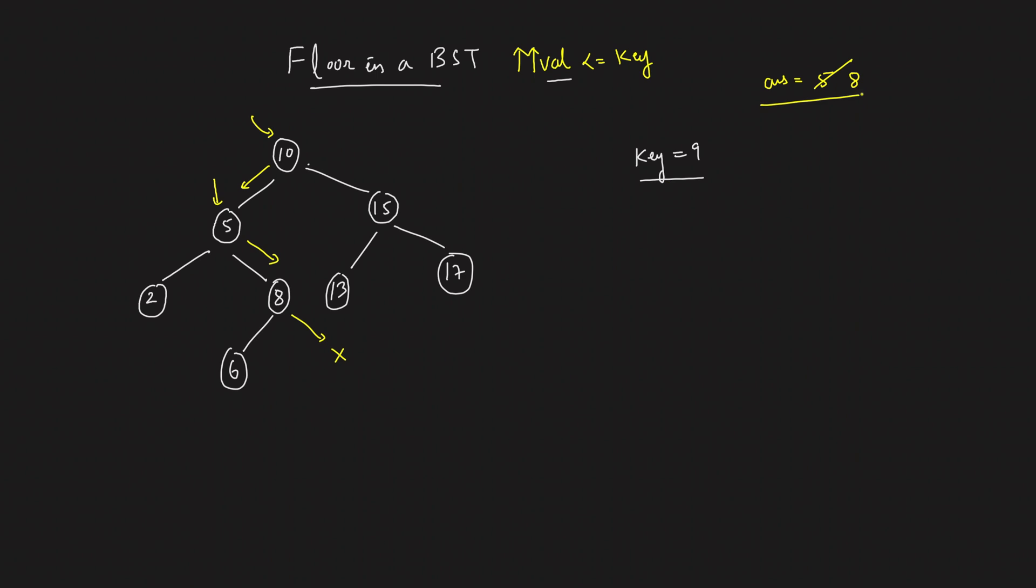So ultimately, the answer is storing something as 8. That's how you get the floor in a BST. Just keep on moving, keep on moving in order of increasing this value. Just try to move in such a way that this value is always increased. And whatever is the last answer stored was definitely going to be your floor in a binary search tree.